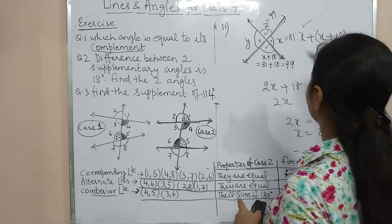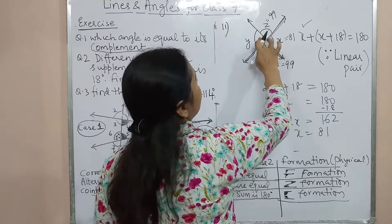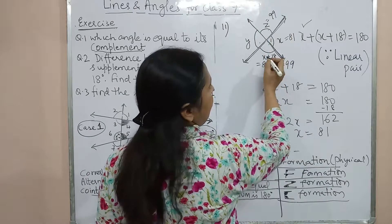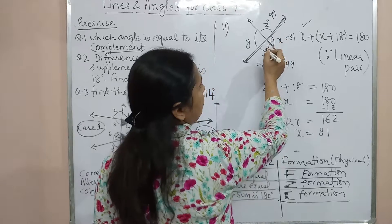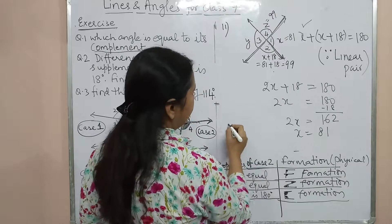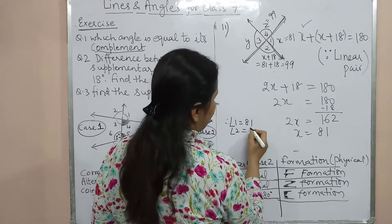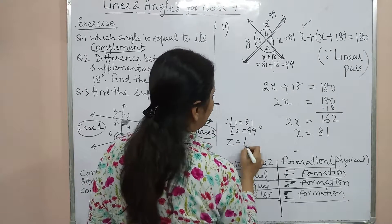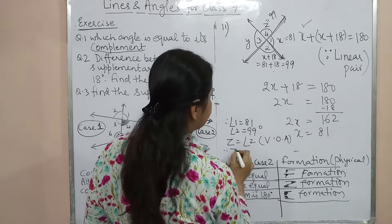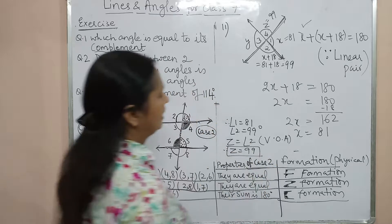Since Z is vertically opposite to angle 2, Z is also 99 degrees. Similarly, Y is vertically opposite to angle 1, so Y = 81 degrees. When writing your solution, always mention the property used: linear pair for the equation, then vertically opposite angles to find Z and Y.